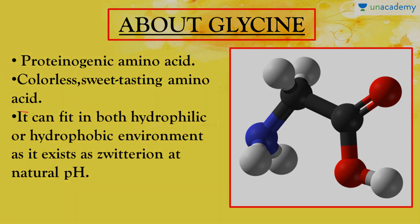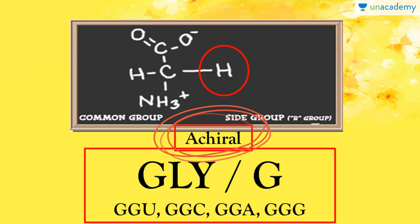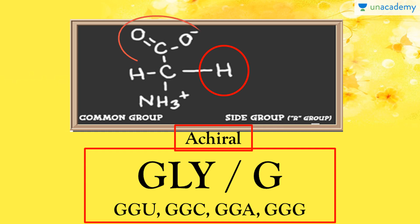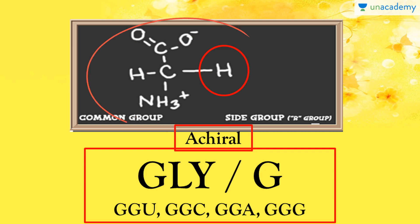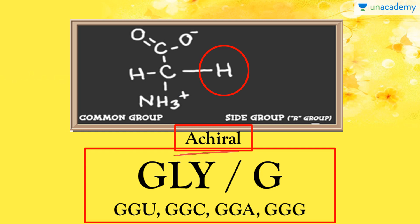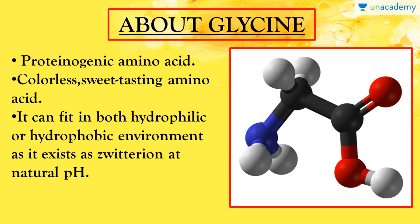Glycine is a colorless, sweet-tasting crystalline solid, and it is unique among all amino acids because it is achiral. This is the only amino acid that is achiral. A carbon atom is chiral when its four attached groups are all different. In glycine, the central carbon has two identical groups — both are hydrogen atoms — so it is achiral. Achiral molecules are not able to rotate the plane of plane-polarized light.